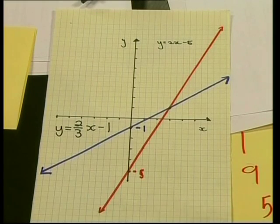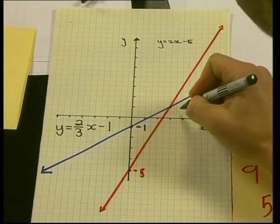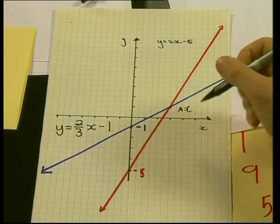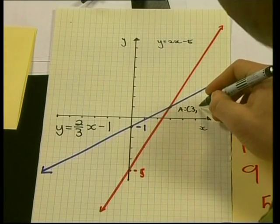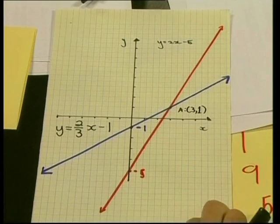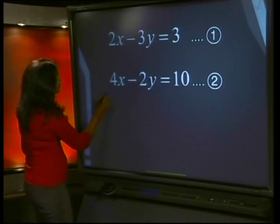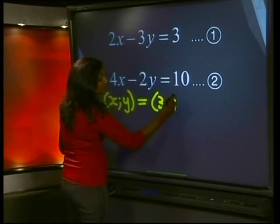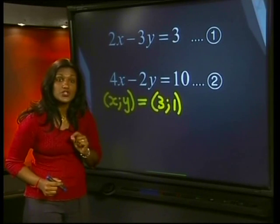1, 2, 3, 1. So this point is a solution to our system of equations. That's correct. This means that the ordered pair, x, y, which is equal to 3, 1, satisfies both these equations. And it's called the simultaneous solution of the equations.